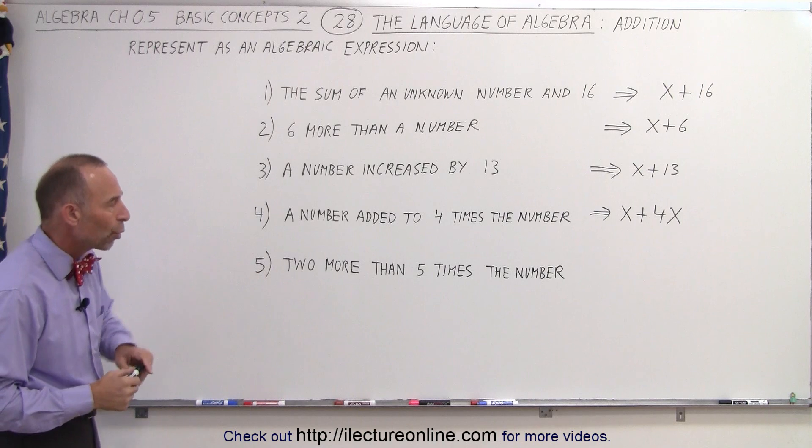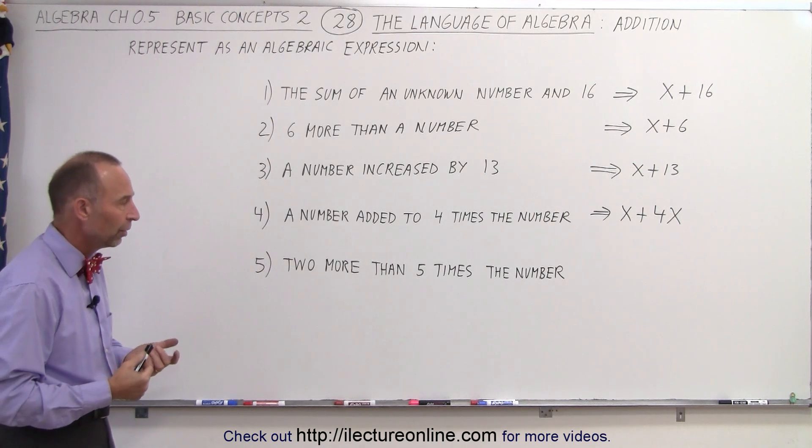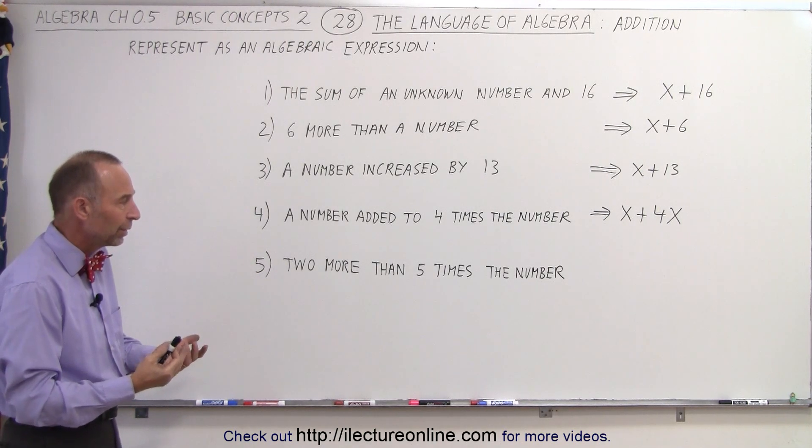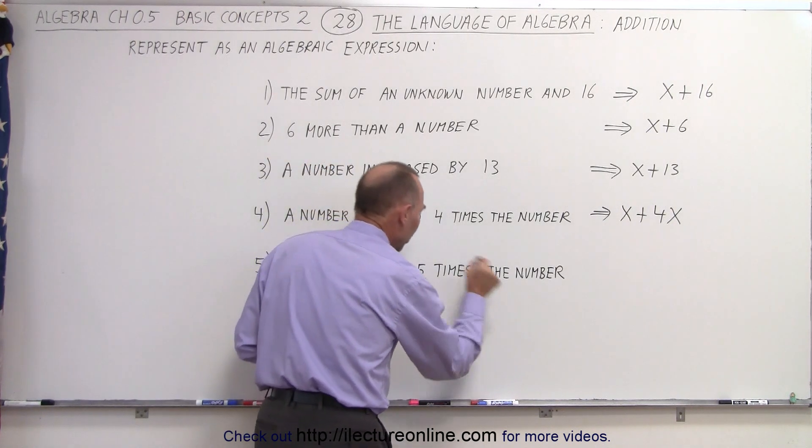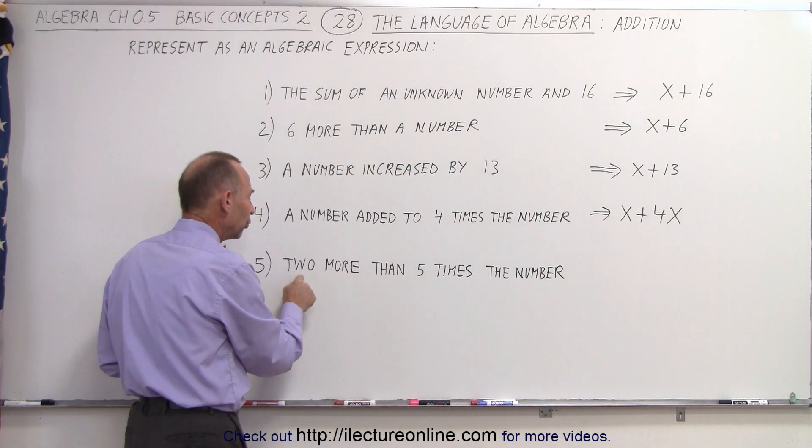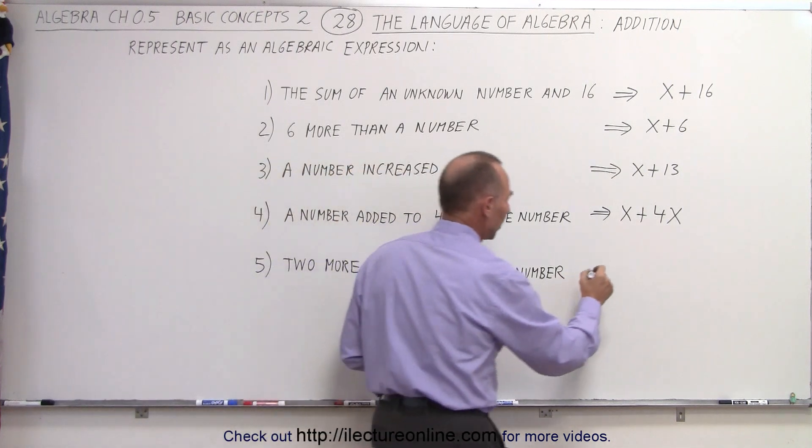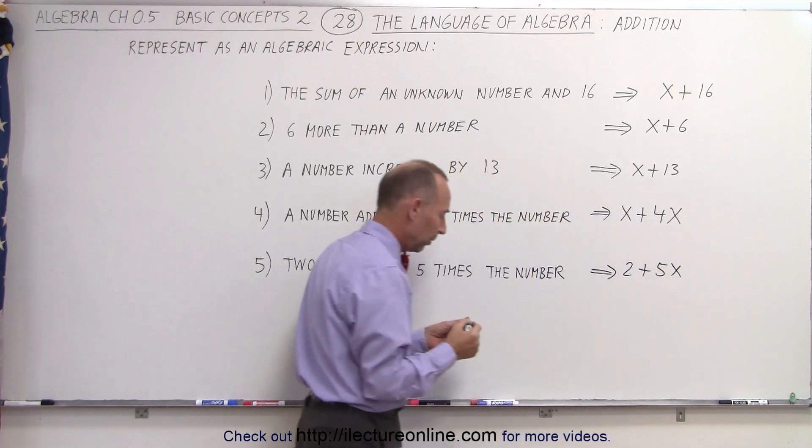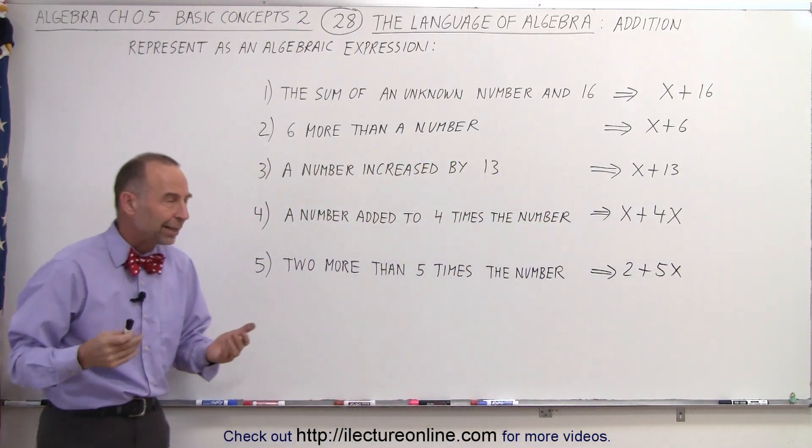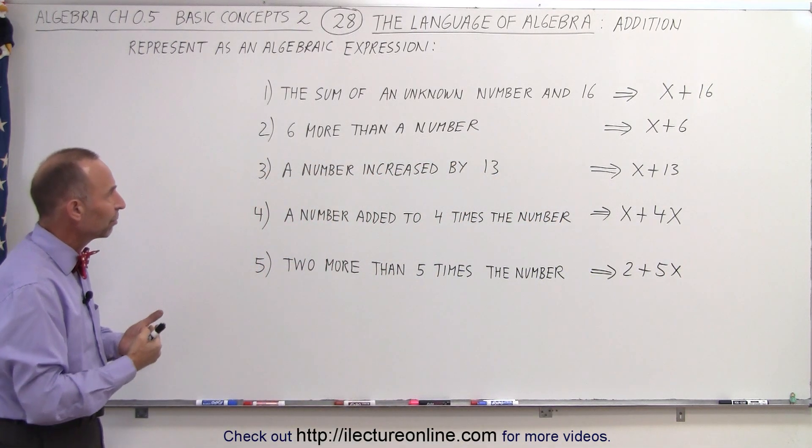And finally, we have two more than five times the number. So we have an unknown number, we take that number, and we multiply it times five, because we want five times the unknown number, and then we want to add two more to that. So that expression then would imply we have two added to five times the number.